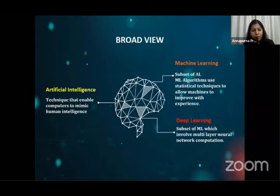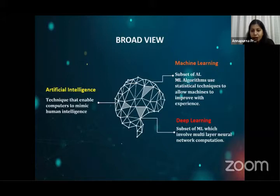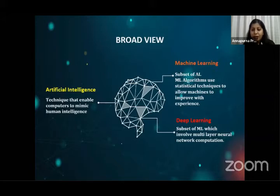In a broad view, artificial intelligence is the broader concept — where a computer can mimic human intelligence. Machine learning is a subset of AI and uses statistical techniques to allow improvement with experience. Deep learning is a subset of machine learning in a deeper sense, representing a human brain-like structure where input is passed through multilayer neurons that perform all the computation.